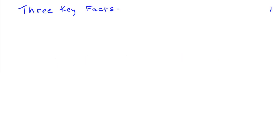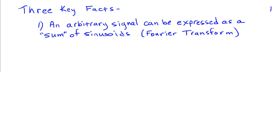There are three key facts that are going to play out in this discussion. The first one is that an arbitrary signal can be expressed as a sum of sinusoids — that's basically the Fourier transform. So if we look at how sampling and aliasing affects sinusoids, we can piece together how this affects arbitrary signals because it's just going to be a superposition.